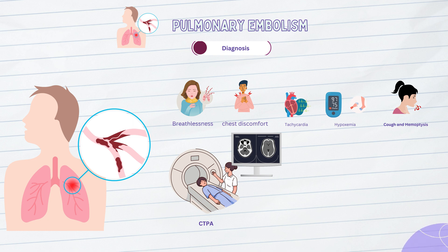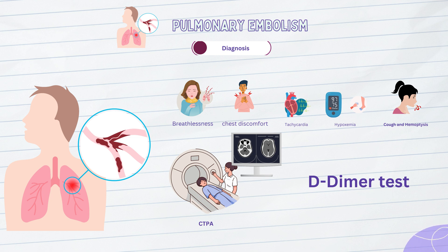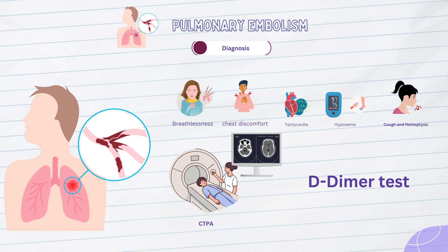In addition to imaging, a blood test called the D-dimer test is often used as a screening tool for pulmonary embolism. D-dimer is a protein fragment released into the bloodstream when a blood clot breaks down. A negative D-dimer test result can be helpful in ruling out pulmonary embolism in patients with a low pretest probability. However, a positive result does not confirm the diagnosis, and further imaging is needed for definitive evaluation. The D-dimer test is particularly useful in combination with clinical assessment and risk stratification to guide the decision for further diagnostic testing.